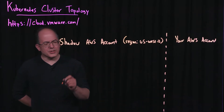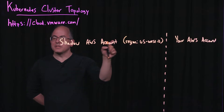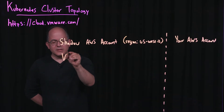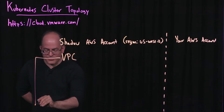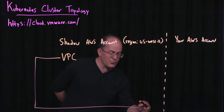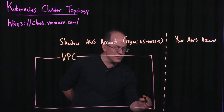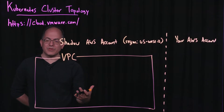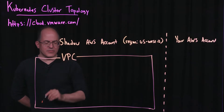Every time we create a production cluster, within the shadow AWS account that is managed by VKE, we are going to create an AWS VPC. For those of you who are not familiar with the VPC, this is a single private network within AWS. All of the virtual machines that we create within this VPC are going to be on private networks and only available within the VPC.